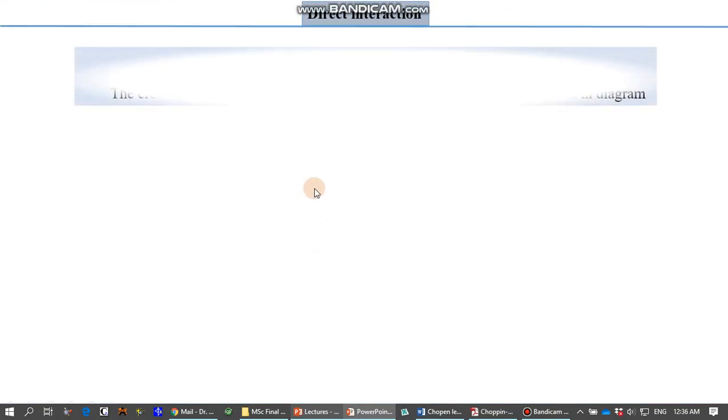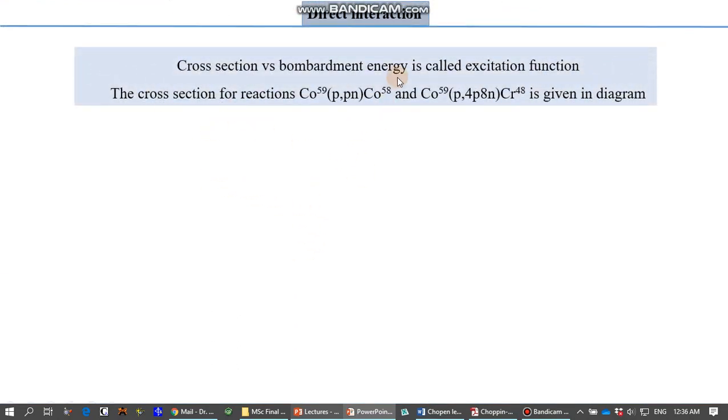Cross section versus bombardment energy, which we already discussed, is called excitation function. The excitation function for this reaction, for example cobalt bombarded by high energy proton producing a proton and neutron and cobalt with atomic mass 58. Another reaction where the same cobalt is bombarded by a proton, but the energy will be different, and four protons and eight neutrons are produced along with a chromium nucleus. In the diagram, this is the reaction: cobalt bombarded by a proton to give cobalt plus proton plus neutron.